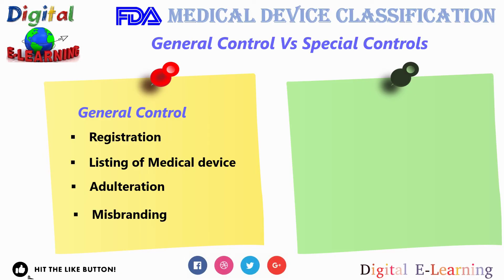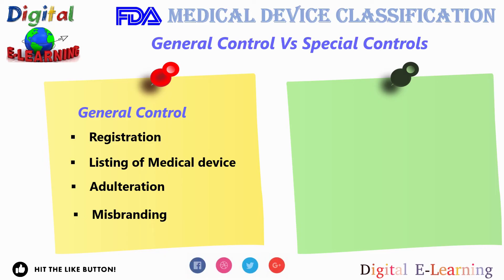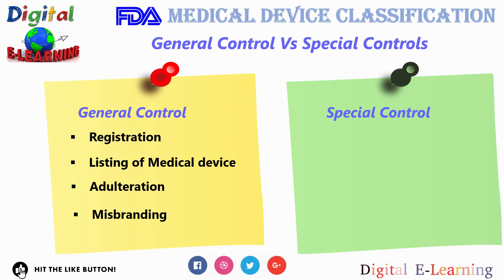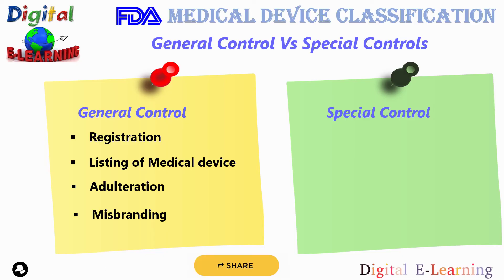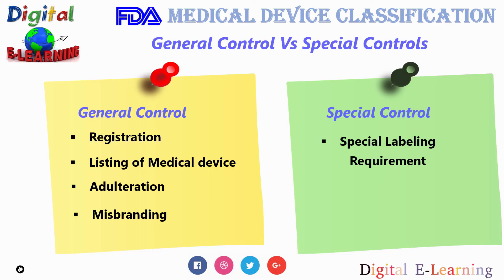Other general controls include labeling — labels must contain appropriate warnings to ensure safe and effective use of devices. Adulteration refers to a device deemed adulterated if it contains any poisonous substance or unsafe color additive. Misbranding means a device is deemed misbranded if it is labeled as false or misleading — such as putting an intended use on labeling that the FDA did not clear, or distributing a device commercially without FDA clearance. Special controls come into play when general controls are not sufficient. Class 2 and Class 3 devices are subject to special controls, which include special labeling requirements, compliance with mandatory performance standards, and post-market surveillance.